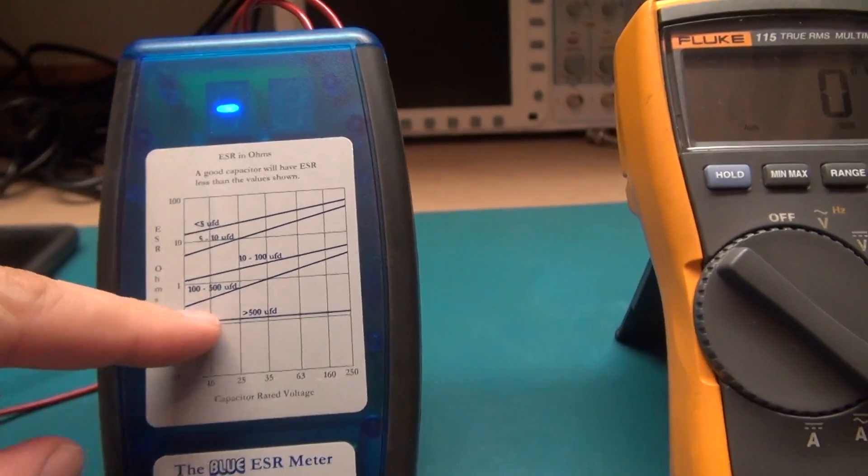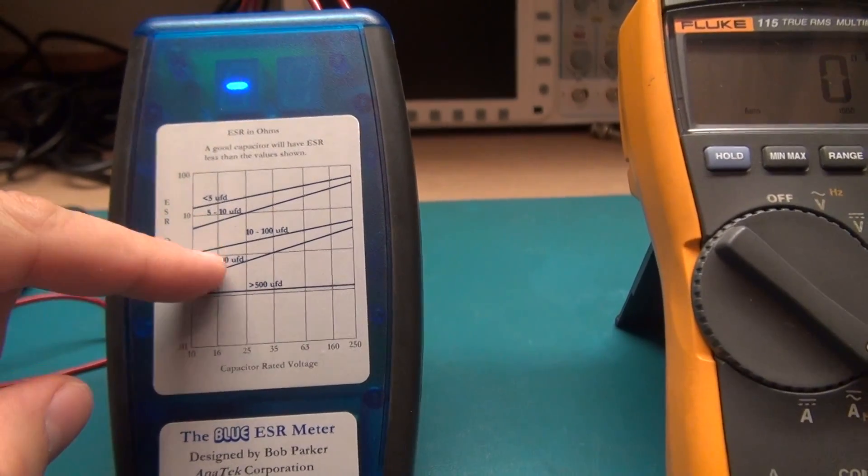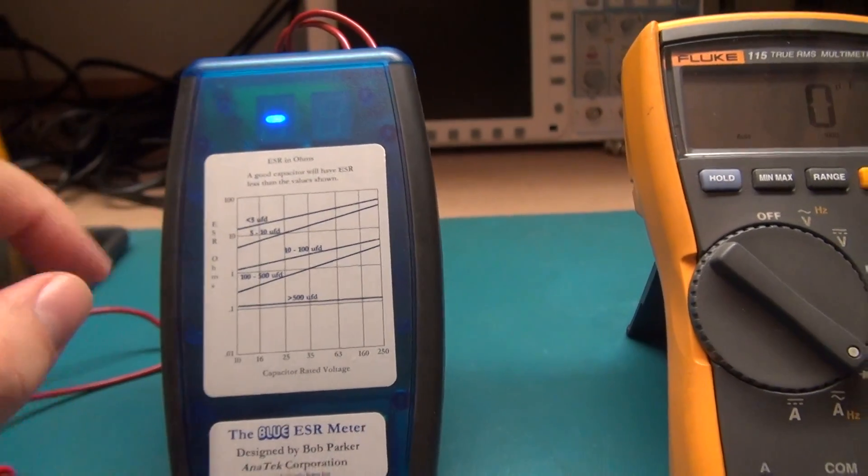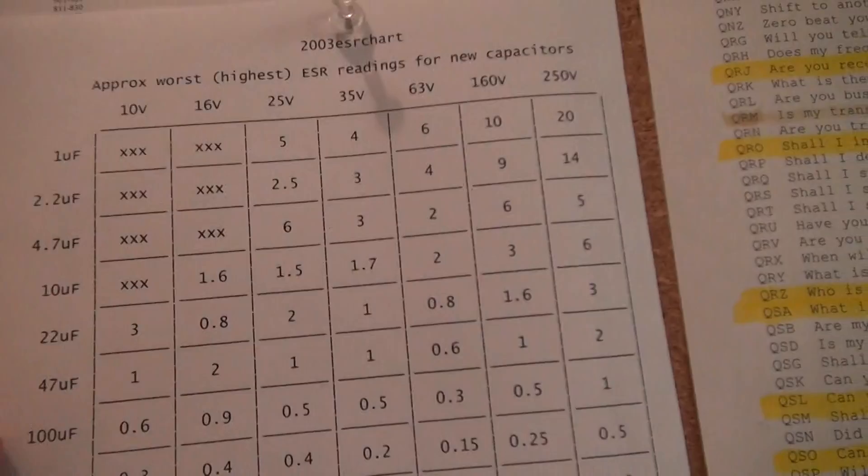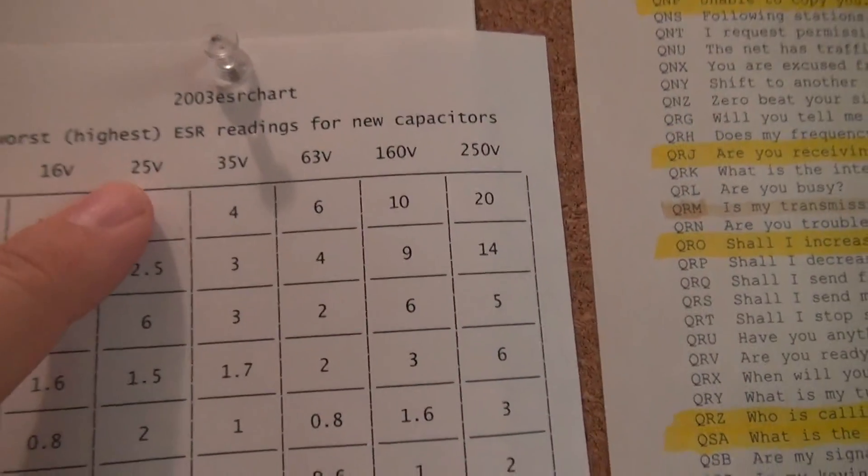I don't like to follow this chart because it's very hard to follow. I have a chart that I printed out which is right here. Basically, at 25 volts at 100 microfarad, you should probably get no more than 0.5 ohms resistance.